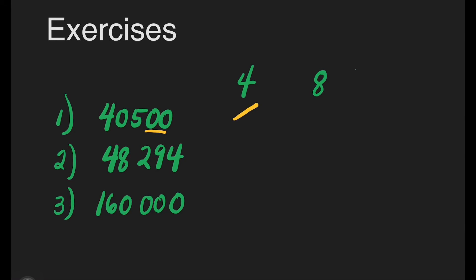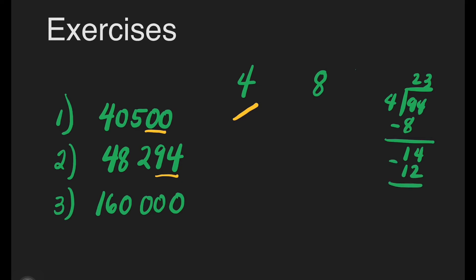How about number 2? 48,294. Is 94 divisible by 4? Let's divide: 94 divided by 4. How many 4s are there in 9? That's 2. 2 times 4 is 8. Subtract: 9 minus 8 is 1. Bring down 4. How many 4s are there in 14? That's 3. 3 times 4 is 12. 14 minus 12 is 2. We have a remainder, so 48,294 is not divisible by 4.